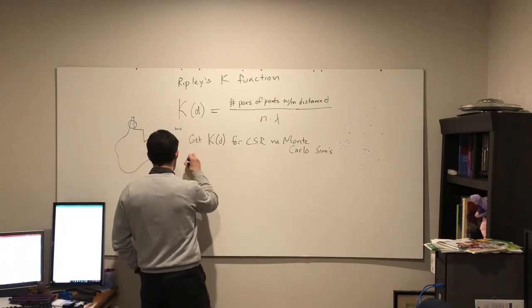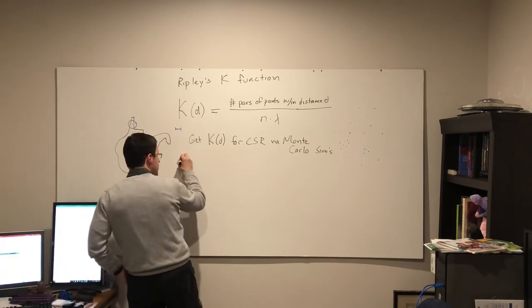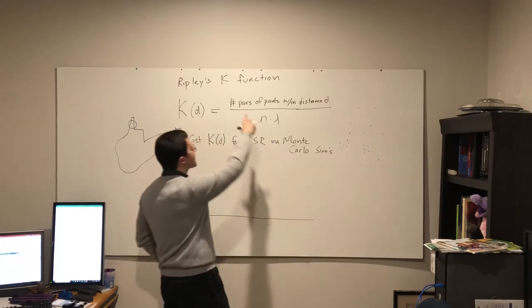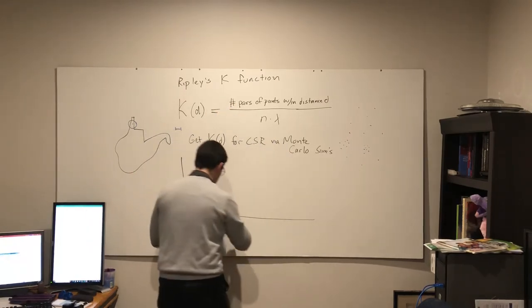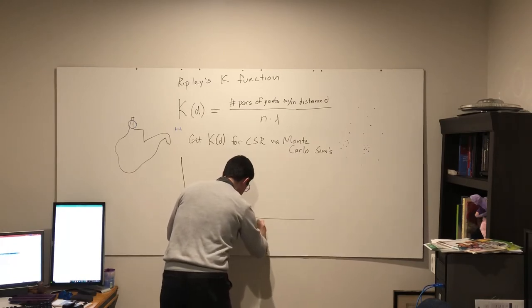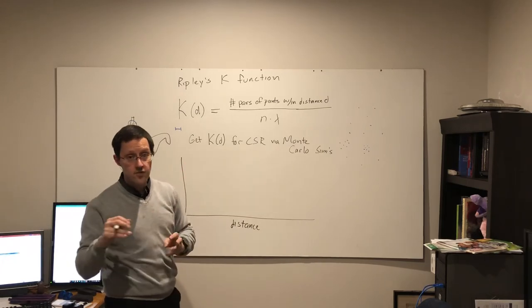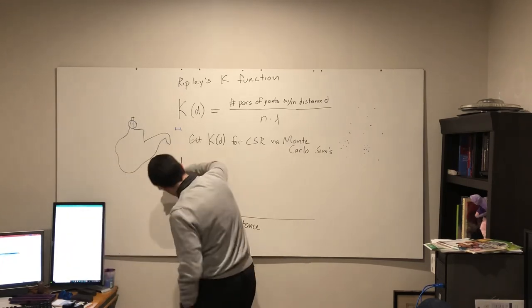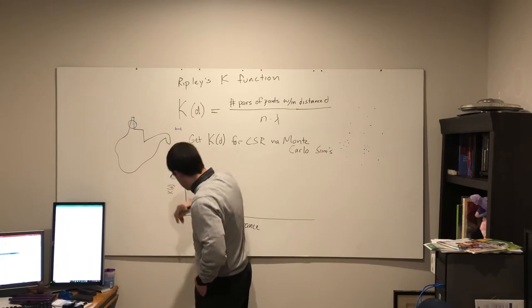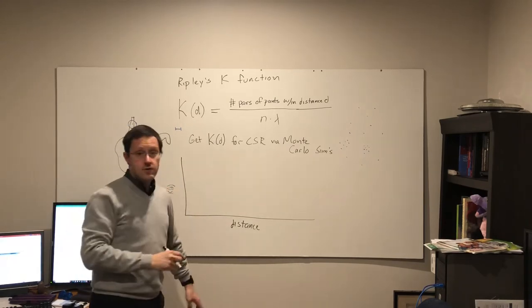And what we end up getting is, as the name suggests, a function, a function of distance, where distance along the horizontal axis and the K function on the vertical.